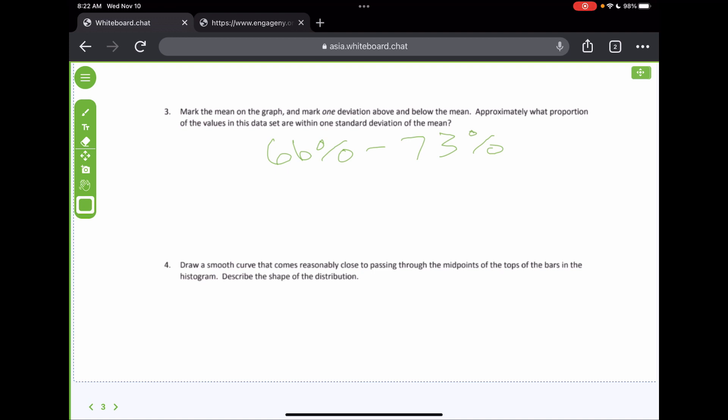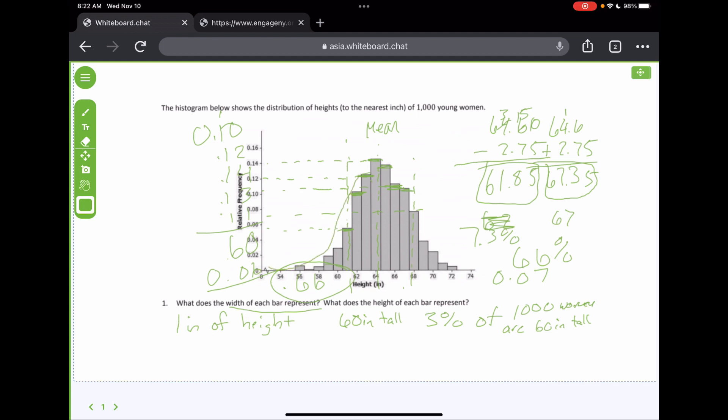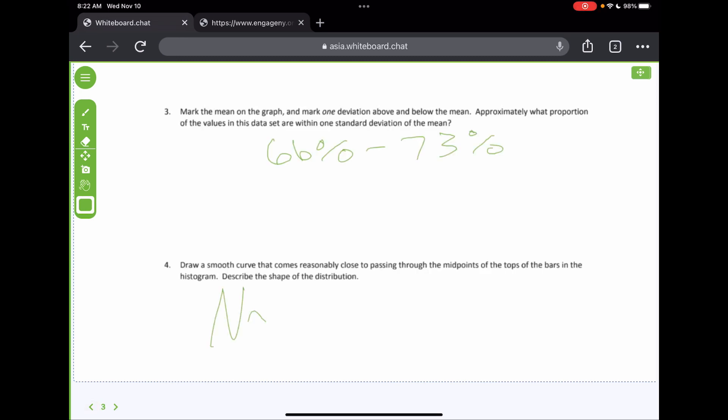All right so let's draw for number four. It says draw a smooth curve it comes reasonably close to passing through the midpoints of the top of the bars on the histogram, describe the shape. Okay, well I think you can all tell that's going to be normally distributed right. If we describe that shape that is normally distributed and we would call that the bell or the mound shape.